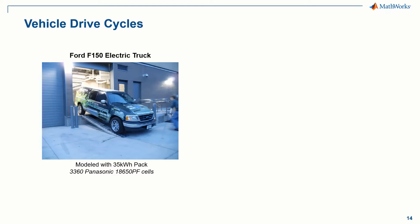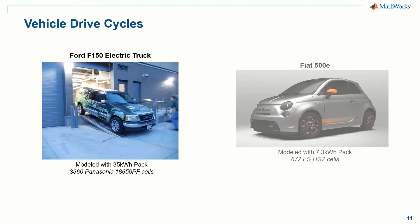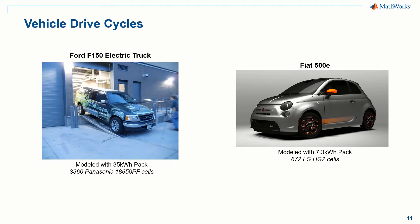To make the results presented in the paper realistic and meaningful, battery cells were tested at a range of temperatures with drive cycle power profiles calculated for electric vehicle applications. For the Panasonic cells, a prototype Ford F-150 electric truck was modeled with a 35 kWh pack consisting of 3,360 cells. For the LG HG2 cells, a Fiat 500E electric vehicle was modeled with a small 7.3 kWh pack consisting of 672 cells. The power calculated from the model for each tested drive cycle was then scaled for a single cell, and these power profiles were applied to the cells with a battery cycler.